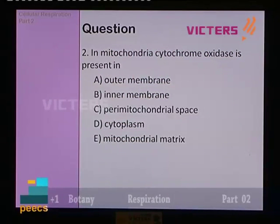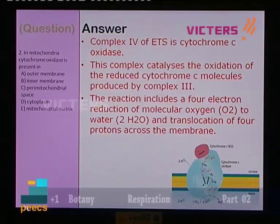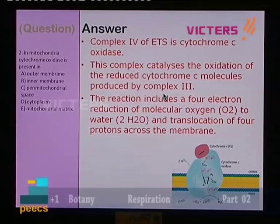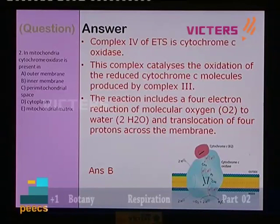Question number 2: in mitochondria, cytochrome oxidase is present in — option A outer membrane, option B inner membrane, option C peri-mitochondrial space, option D cytoplasm, or mitochondrial matrix. Complex 4 of the electron transfer system is cytochrome C oxidase. This complex catalyzes the oxidation of reduced cytochrome C produced by complex 3. The answer is B — cytochrome oxidase is present in the inner membrane.